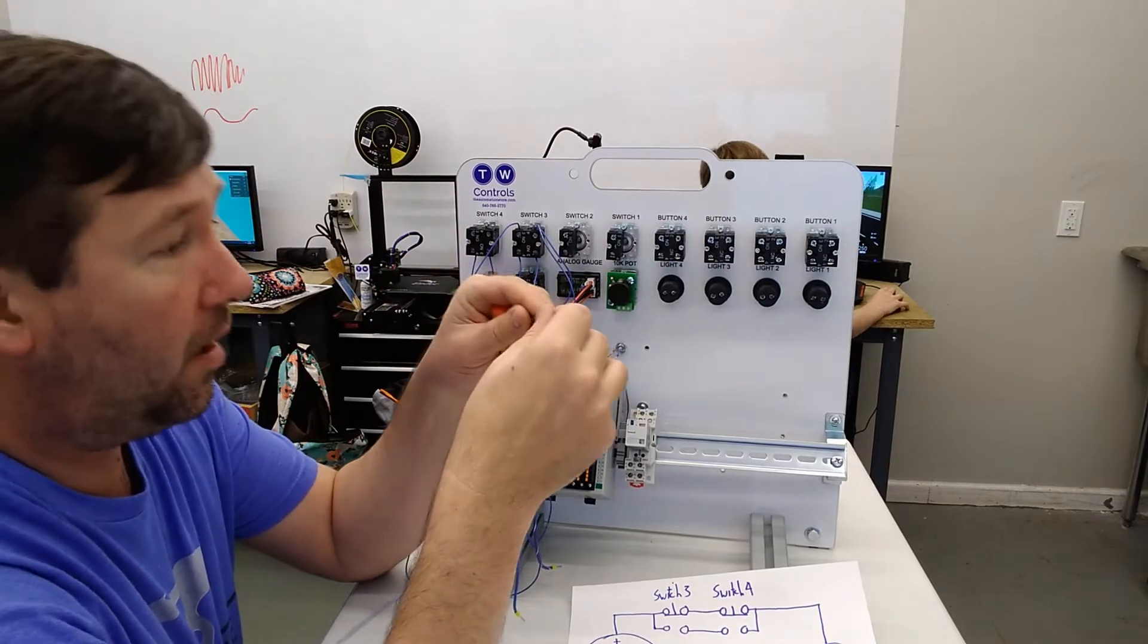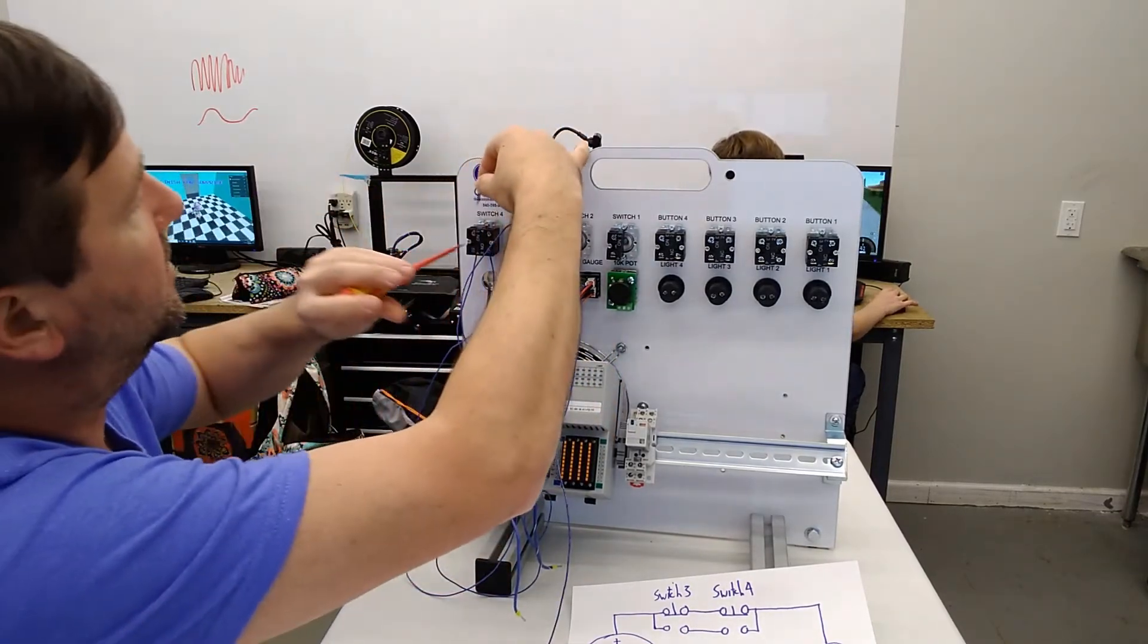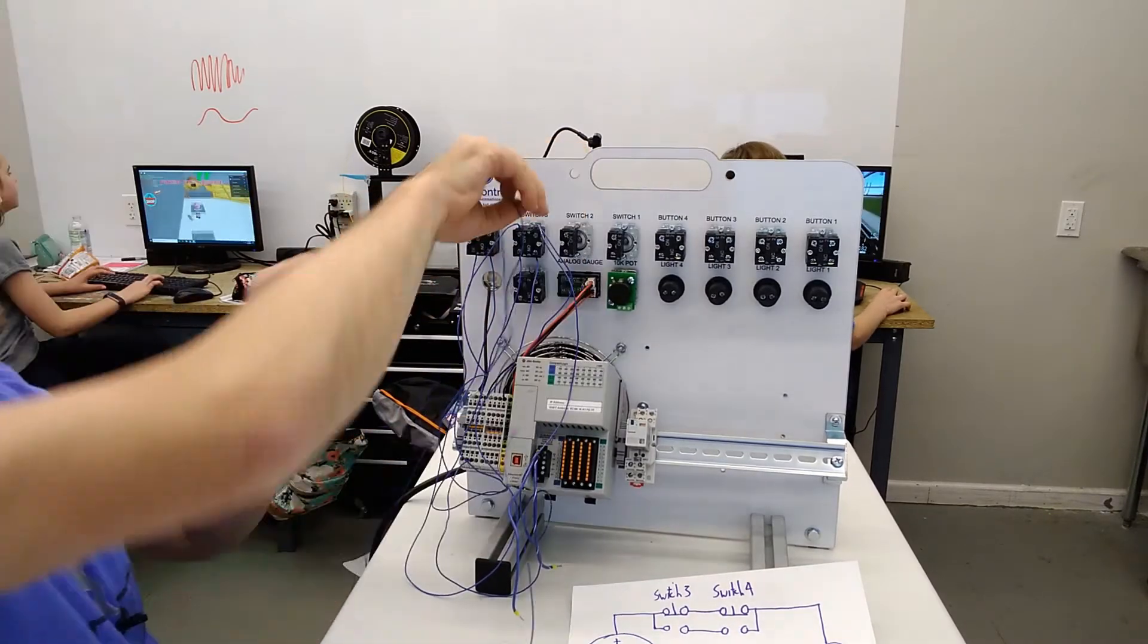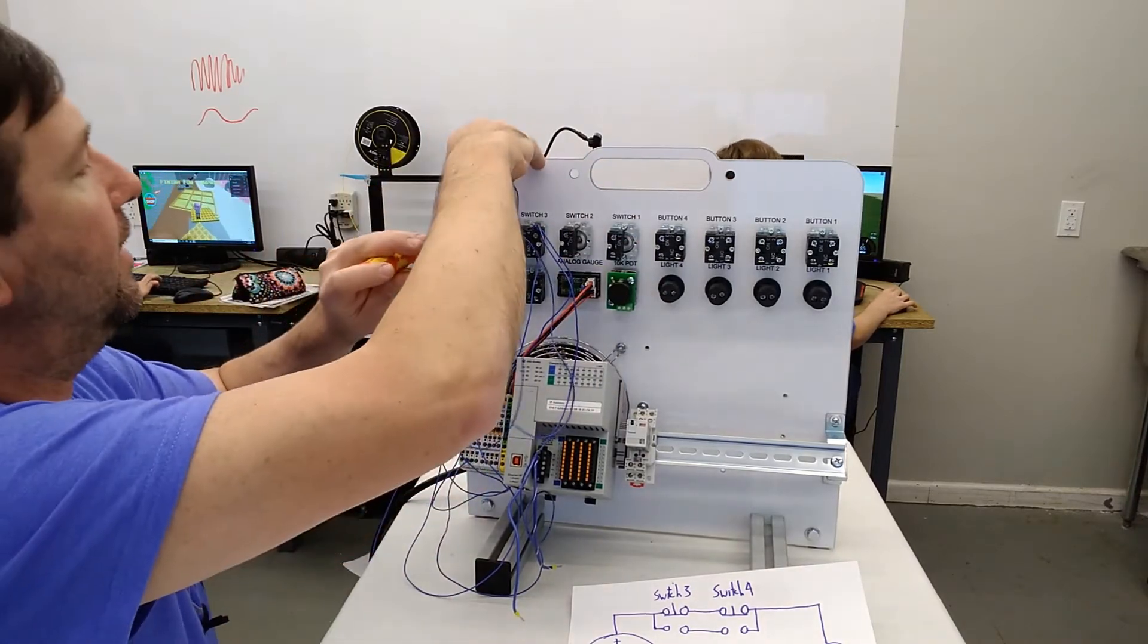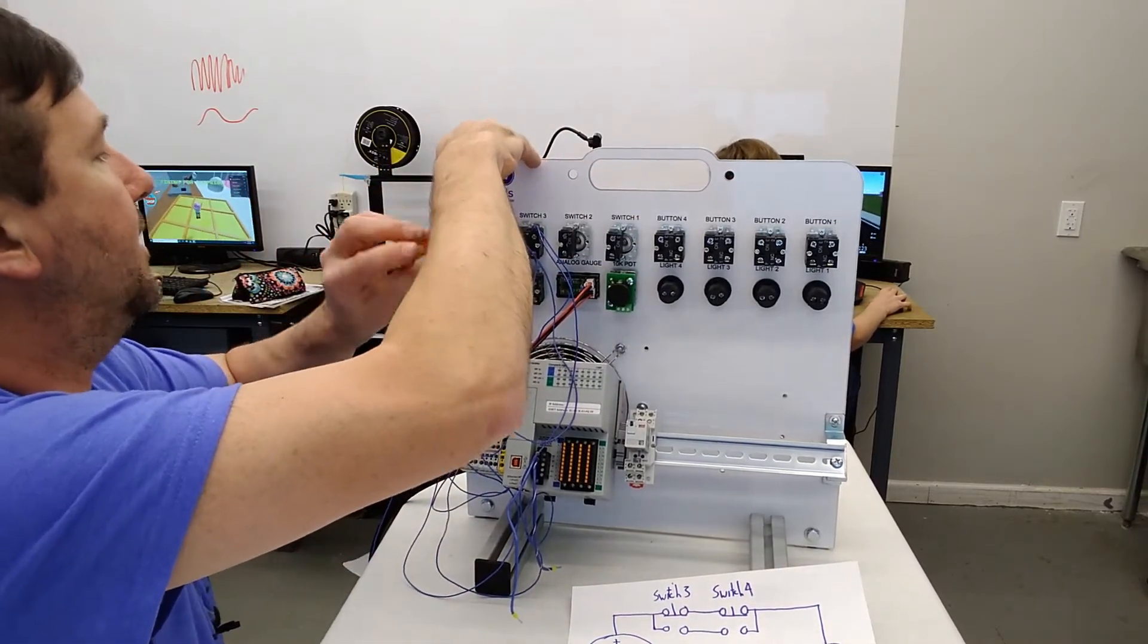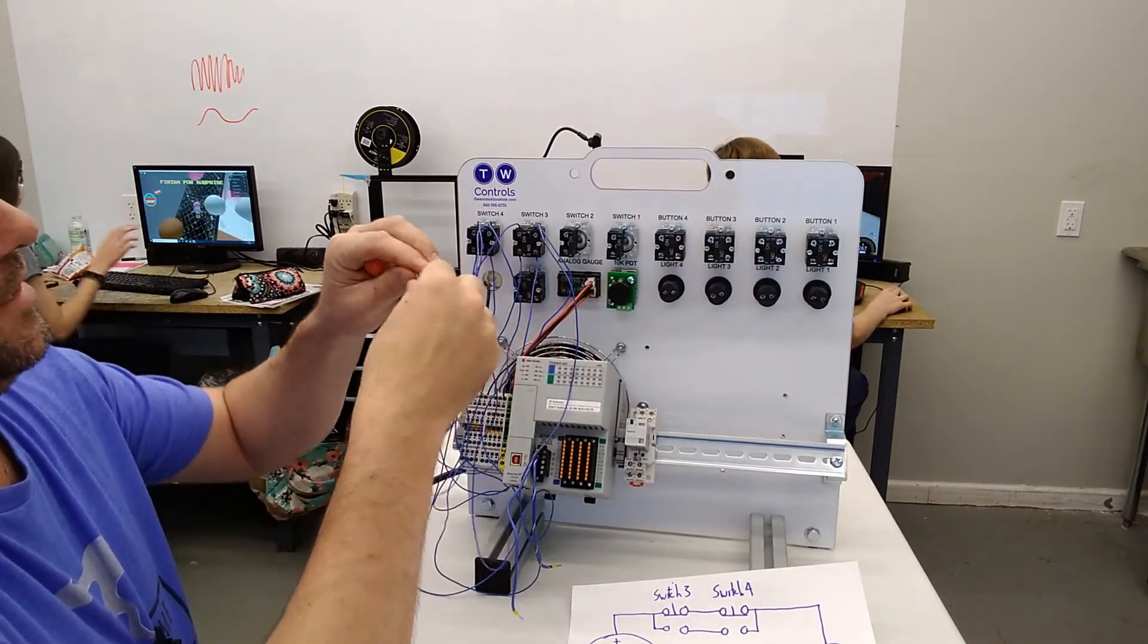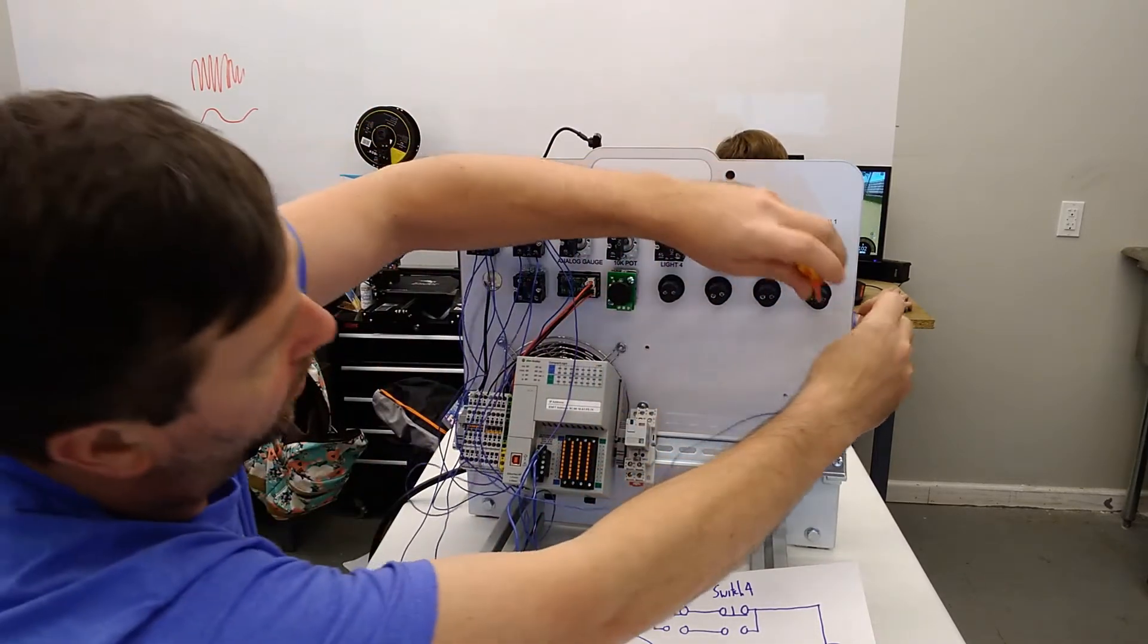Now we're going to grab two wires and we're going to put both of them into the top right switch four contact. And one of those wires, we will connect to the left contact at the top of switch four. And the other one, we are going to take to one side of light number one.